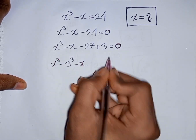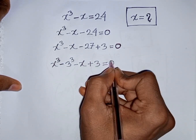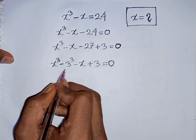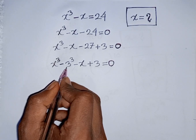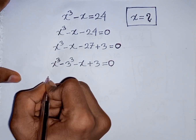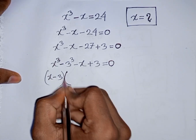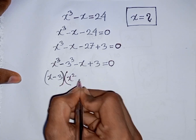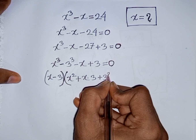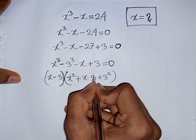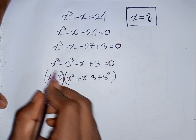Then minus x plus 3 is equal to 0. Here you can apply the formula of a³ minus b³, where a is x and b is 3. According to the formula, you can write x minus 3 times x² plus x times 3 plus 3². That means a minus b times a² plus ab plus b² — this is the formula of a³ minus b³.